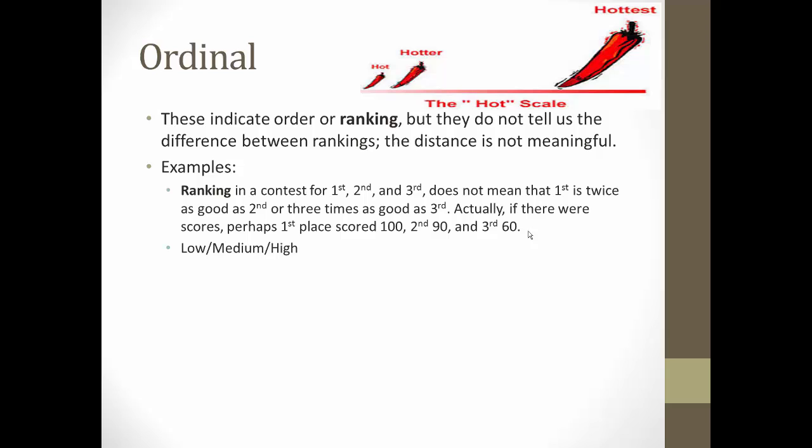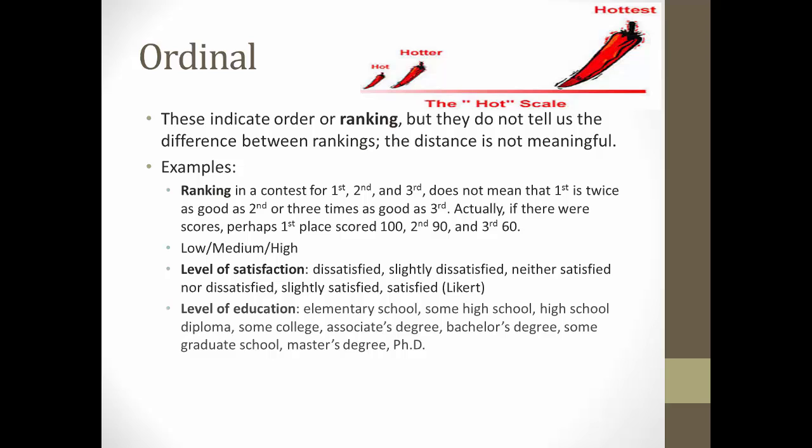Now, low, medium, and high is another example. These have no numeric value. Another example would be the usual Likert scale that you see that says dissatisfied, slightly dissatisfied, neither satisfied nor dissatisfied, slightly satisfied, and satisfied. These are technically ordinal, this is a technically ordinal measurement. And level of education is also another example here. Elementary school, some high school, and so on, all the way to PhD. There's no real interval of differences between these listings here. And, like I said, same way with the Likert scale, you really don't know what the distance is between these things.